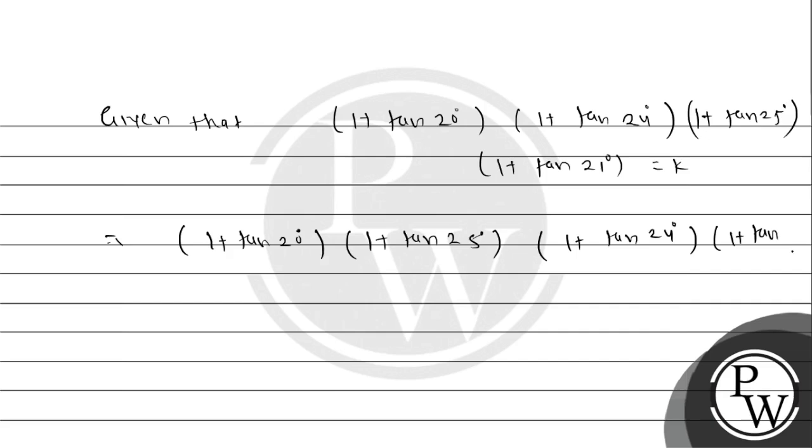1 plus tan 25 degree, 1 plus tan 21 degrees. Now we are going to multiply.